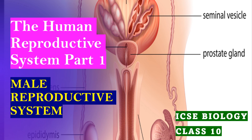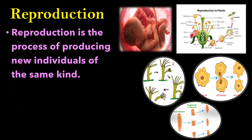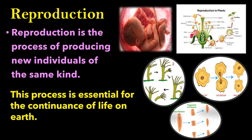Good morning dear students. Today we are discussing the human reproductive system, part 1: male reproductive system. Reproduction is the process of producing new individuals of the same kind. Plants as well as animals reproduce in different ways. This process is essential for the continuance of life on earth — to maintain their generation, reproduction is very essential.